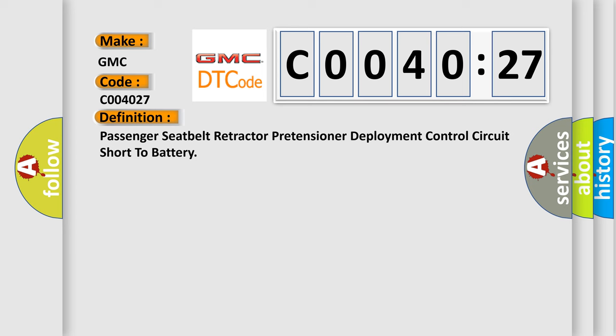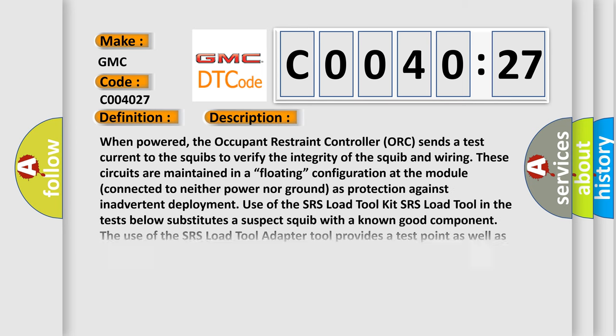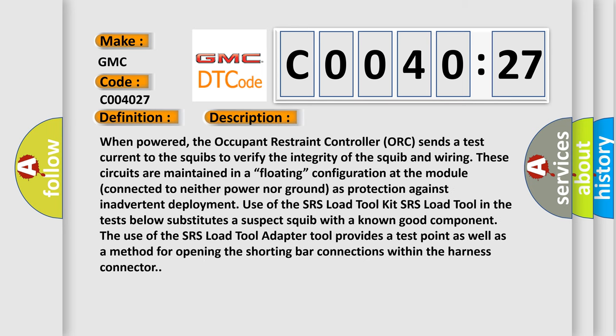The basic definition is Passenger Seatbelt Retractor Pretensioner Deployment Control Circuit Short to Battery. And now this is a short description of this DTC code. When powered, the occupant restraint controller sends a test current to the squibs to verify the integrity of the squib and wiring. These circuits are maintained in a floating configuration at the module connected to neither power nor ground as protection against inadvertent deployment. Use of the SRS load tool kit substitutes a suspect squib with a known good component.